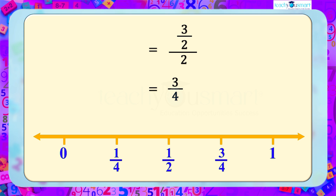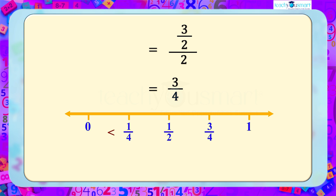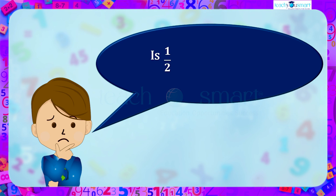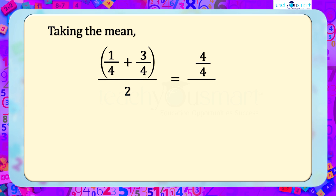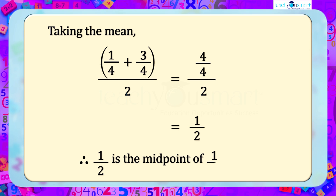By observing this number line, we can say that 0 < 1/4 < 1/2 < 3/4 < 1. Now we can see that 1/2 lies between 1/4 and 3/4. Is 1/2 the midpoint of both 1/4 and 3/4? Let's check. Taking the mean of 1/4 and 3/4, we get (1/4 + 3/4) / 2 = (4/4) / 2 = 1/2. Therefore, 1/2 is the midpoint of 1/4 and 3/4.